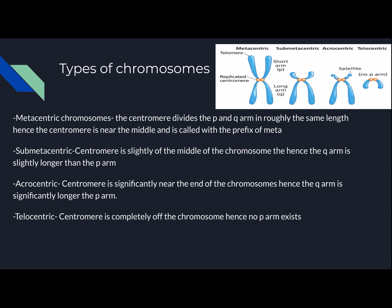Telocentric is when the centromere is completely off the chromosome. Hence, no P arm exists, because if the centromere is off the chromosome, there's no other arm, meaning there's no smaller arm. Thus, the P arm does not exist.